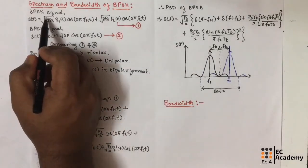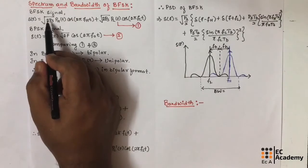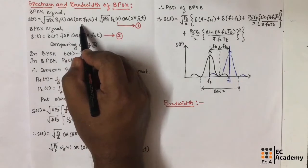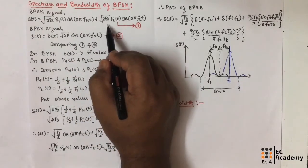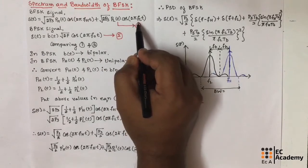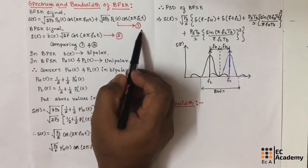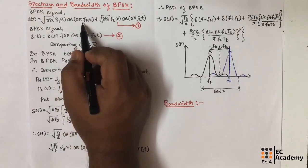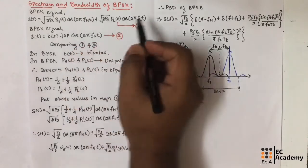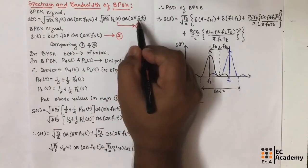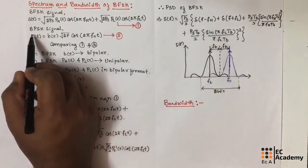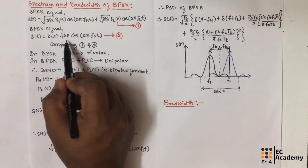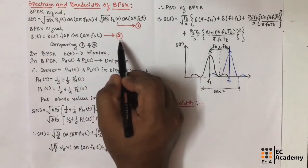We can write the BFSK signal as s(t) = sqrt(2Ps) * ph(t) * cos(2π fh t) + sqrt(2Ps) * pl(t) * cos(2π fl t). Let us take this as equation number 1. We know the BPSK signal can be written as b(t) * sqrt(2P) * cos(2π f0 t). Let us take this as equation number 2.